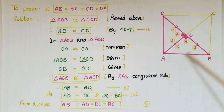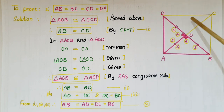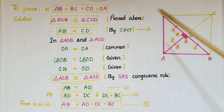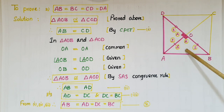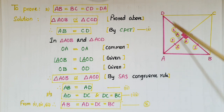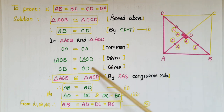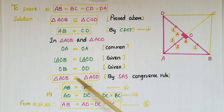Next, we prove all sides are equal: AB equals BC equals CD equals DA. From the congruence of triangle AOB and triangle COD, AB equals CD by CPCT. Now to prove AB equals AD, we take triangle AOB and triangle AOD: OA equals OA as a common side, angle AOB equals angle AOD because diagonals bisect at 90 degrees, and OB equals OD because diagonals bisect each other. By SAS congruence, triangle AOB is congruent to triangle AOD.